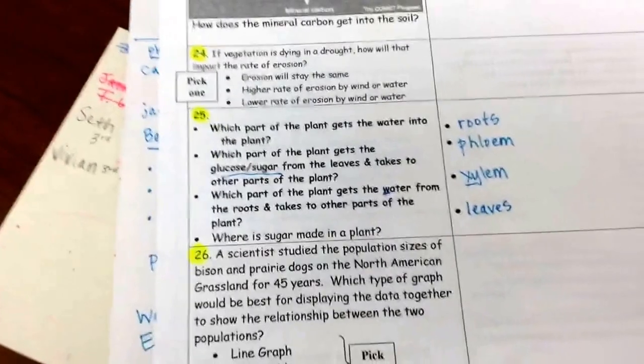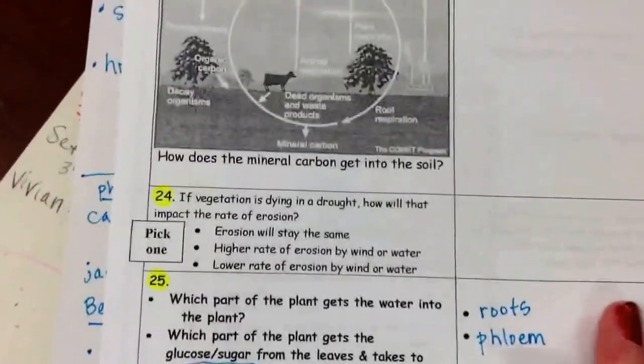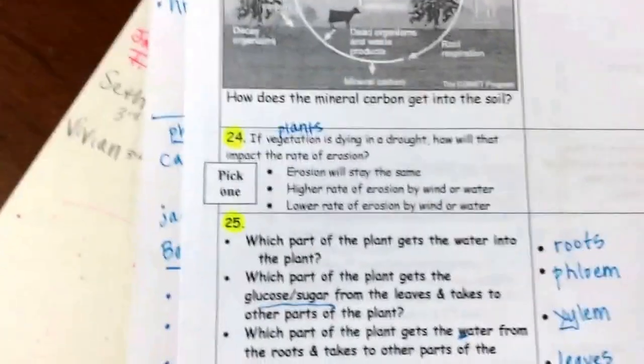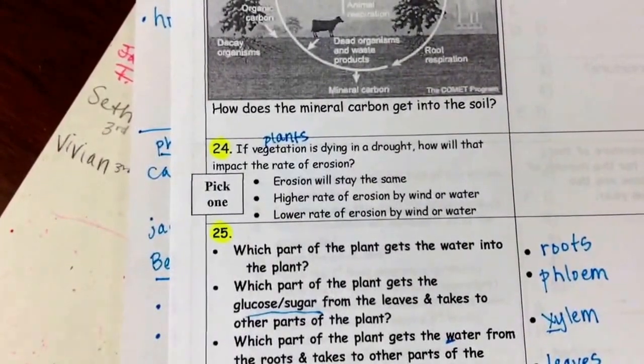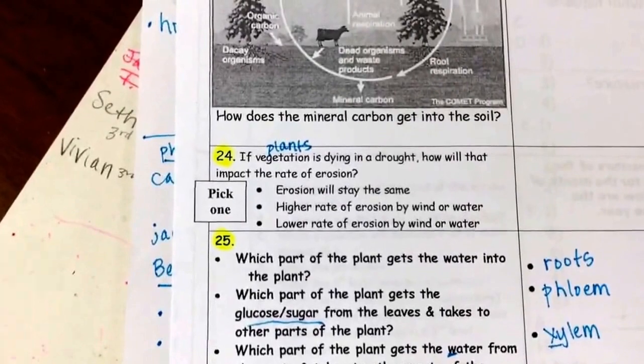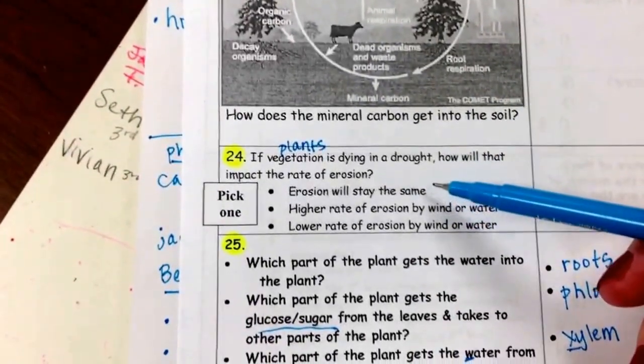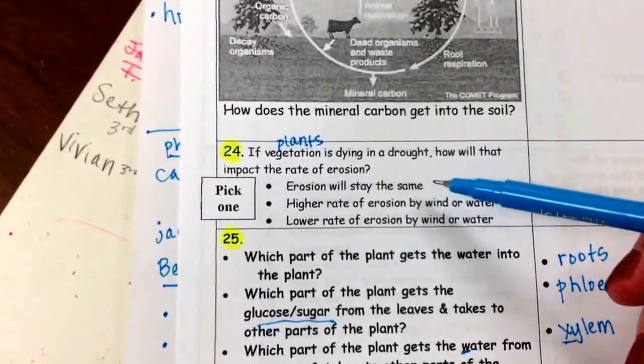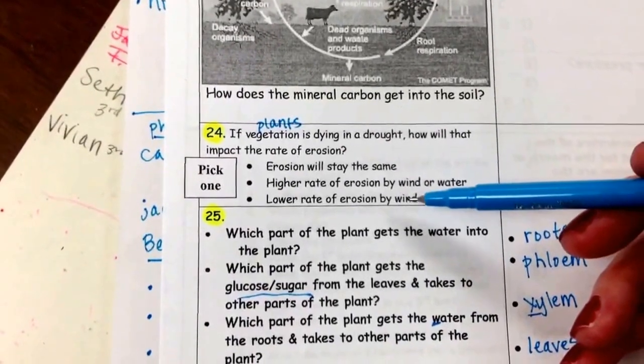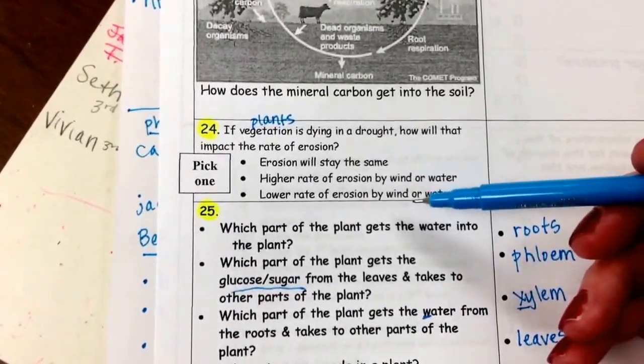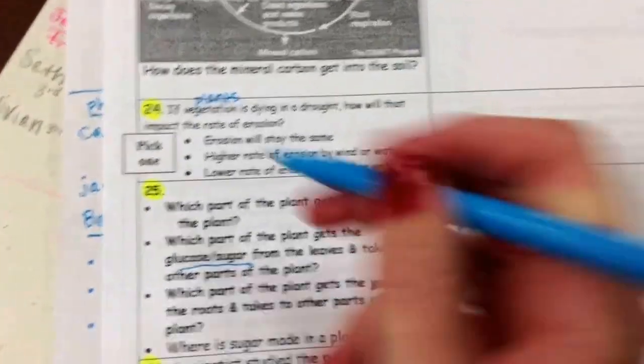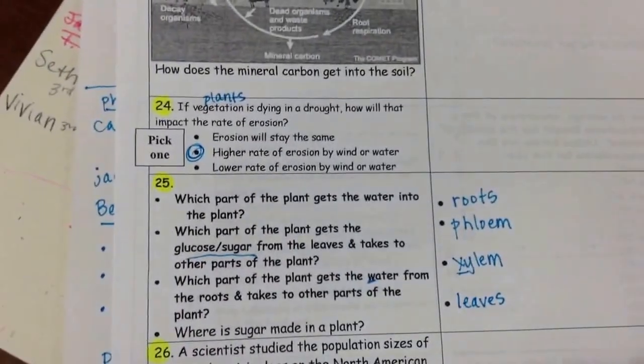Now, here's another question right here. If vegetation - remember, that's the science word for plants - so if the plants are dying in a drought, they are all dead, how will it impact the rate of erosion? If you don't have plants holding in the soil, are you going to have erosion staying the same? Remember, erosion is the moving away of sediment. Is it going to stay the same? Are you going to have more erosion by wind or water? Or is the erosion going to slow down? If you take away the plants, you don't have anything to hold the soil in place, you're going to have an increased rate of erosion. There's going to be more soil being moved away. Higher rate of erosion.